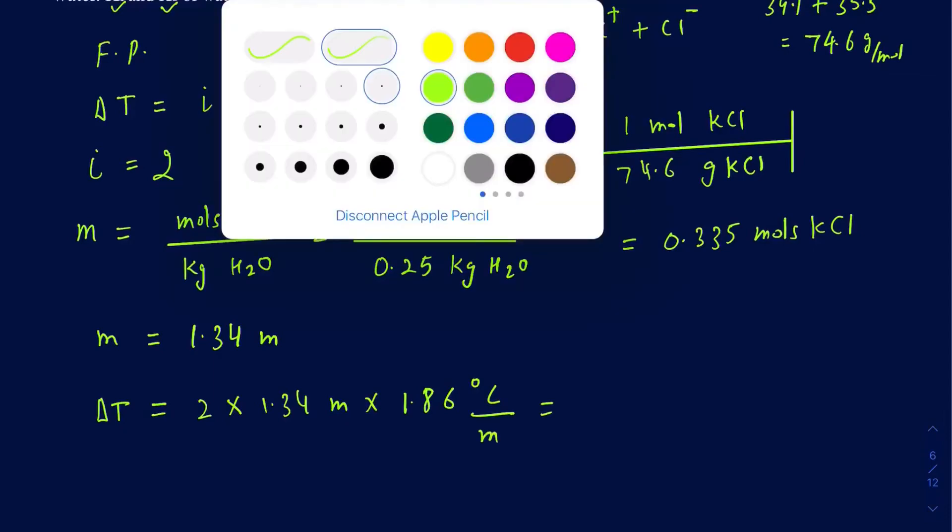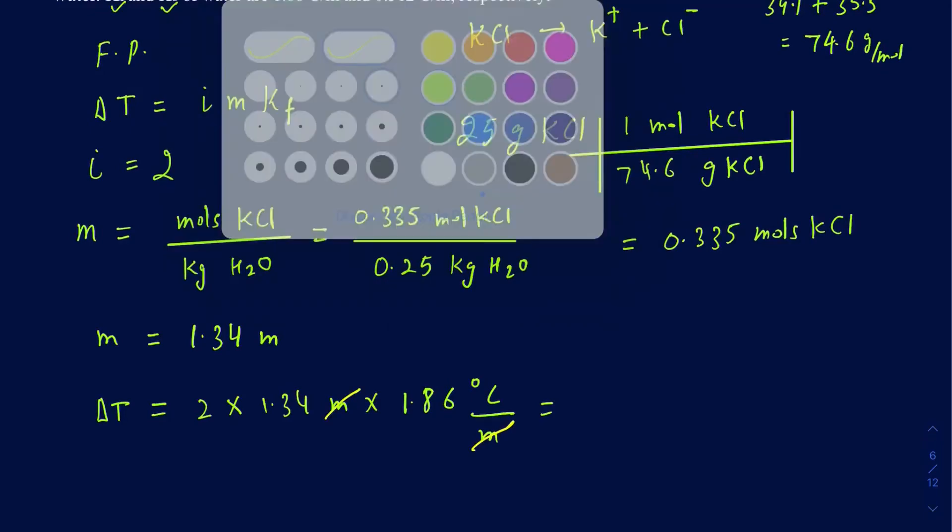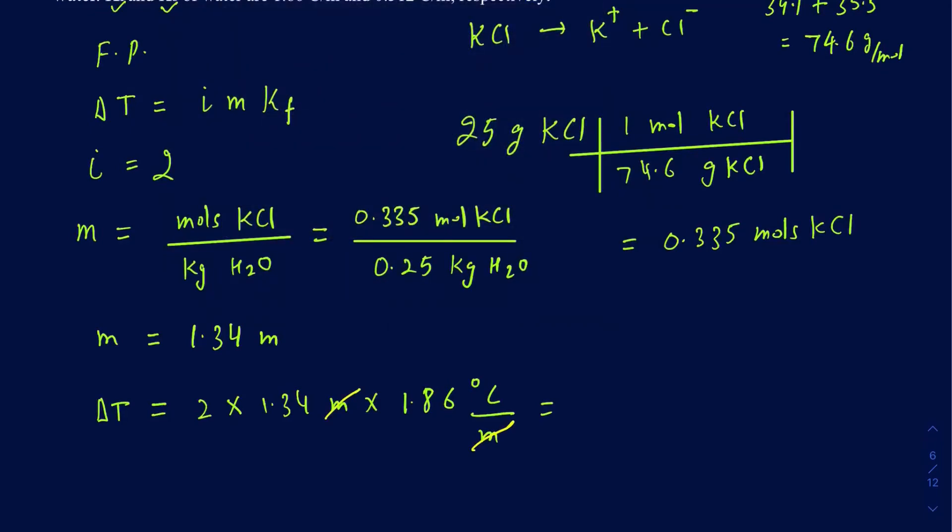and that leaves you with 2 times 1.34 times 1.86, and that's going to be 4.98, so that's almost 5.0 degrees Celsius. So that's your delta T.